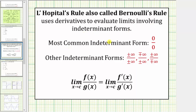The most common indeterminate form is zero divided by zero. However, if the limit is in any of these indeterminate forms listed, we can apply L'Hopital's rule, which states the limit as x approaches c of f(x) divided by g(x) equals the limit as x approaches c of f′(x) divided by g′(x). The idea is that this limit will be easier to evaluate than the original.